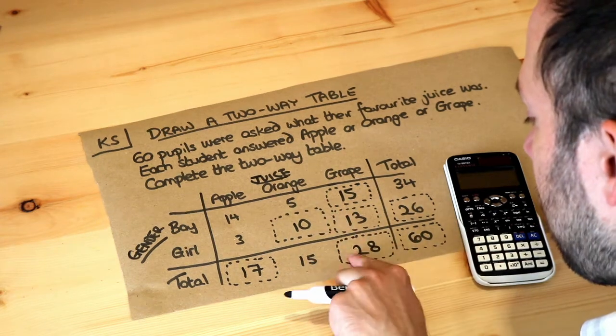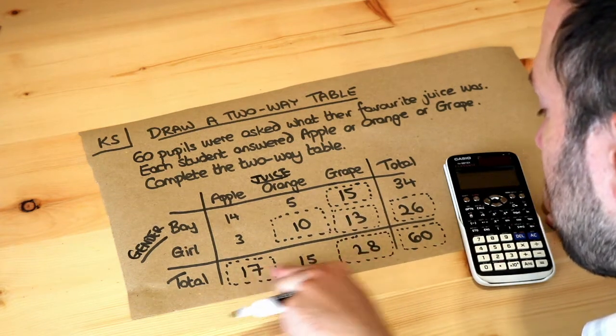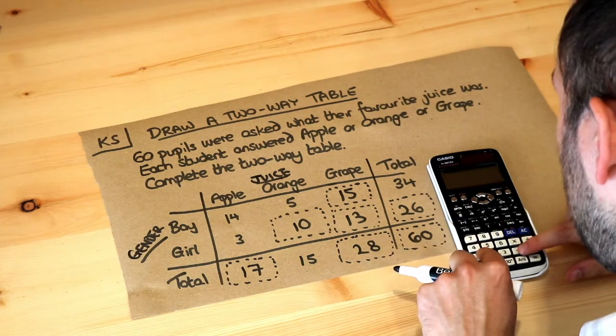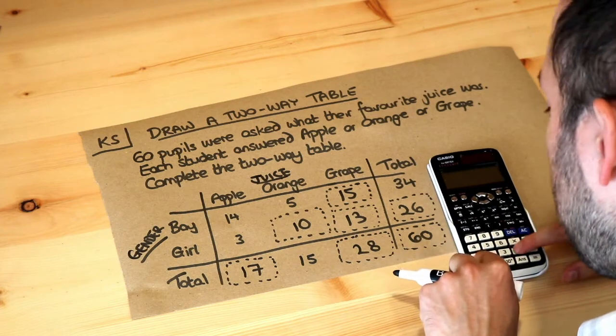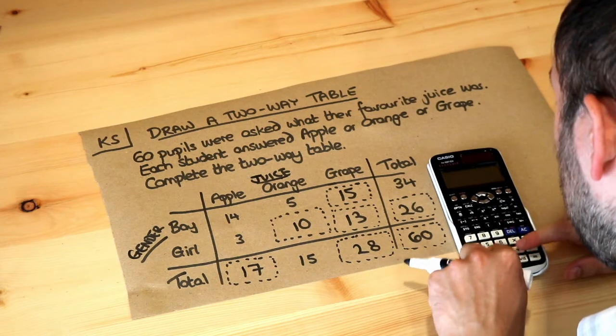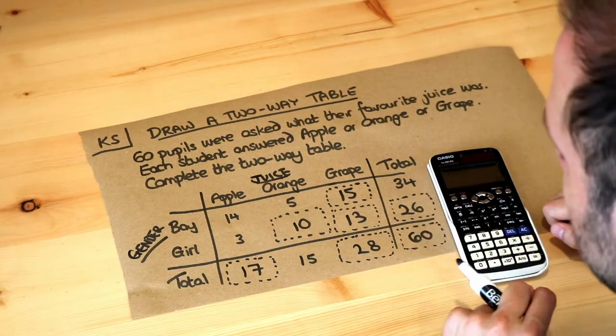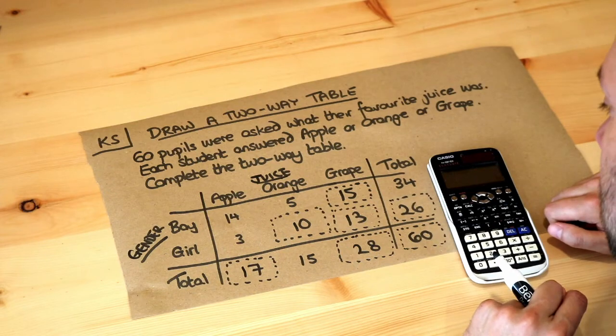Let's just double check — the three numbers at the bottom should add up to 60. So we do 17 plus 15 plus 28, and that indeed does add up to 60.